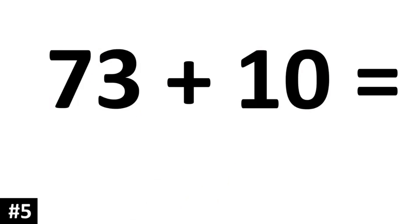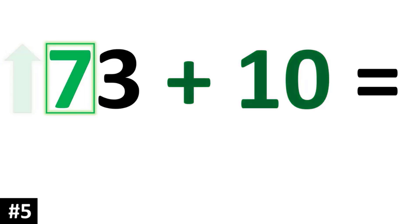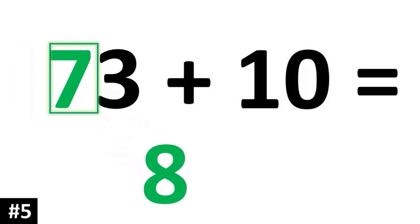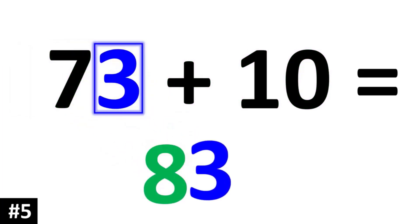73 plus 10: to add 73 by 10, that 7 goes up by 1 and becomes an 8, and the ones digit stays the same. 73 plus 10 is 83.